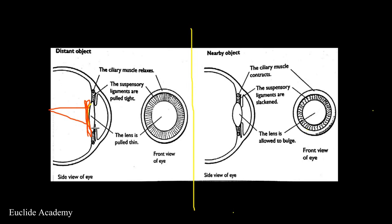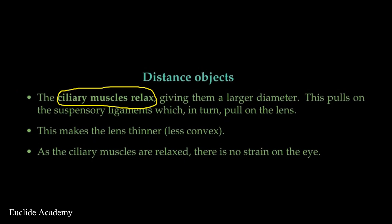So when you're looking at something from a longer distance, the lens will be pulled thin, meaning it will extend. To help remember: the lens will be pulled thin or increase in length when looking at a distant object. Note that there is no strain put on the eyes — you don't feel anything, no strain. That is what we are looking at for a distant object. Your muscles are relaxed, there is no strain on the eye.